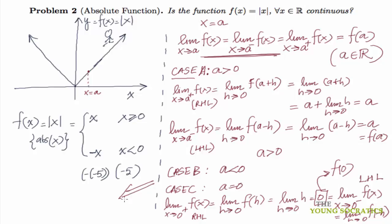So by this argument, we conclude that for all a in ℝ, we have limit of x going to a of f(x) is equal to f(a), and that proves that the function |x| is continuous.